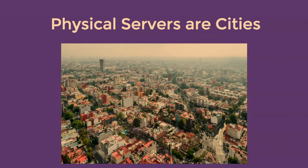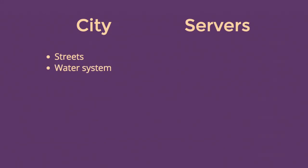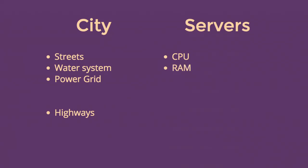Let's first look at physical servers. Let's look at the physical server as a city, where multiple people live and we have a lot of things in there. In cities, we have things like streets, a water system, and power grids. If you compare that to a physical server, we have a CPU — maybe like the street — RAM is like the water system, and storage is like the power grid. The highways of a city are the network between multiple servers. Cities provide us infrastructure as humans, and physical servers provide our apps with resources like CPU, RAM, and storage.